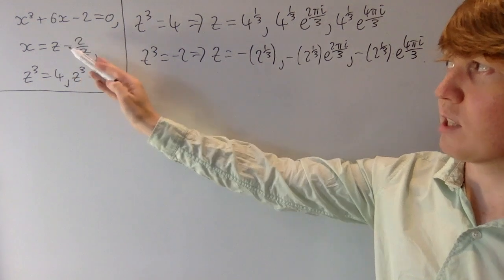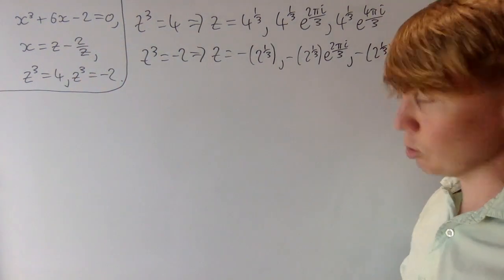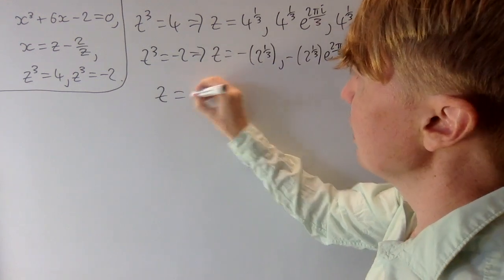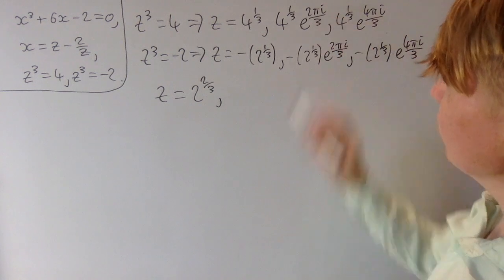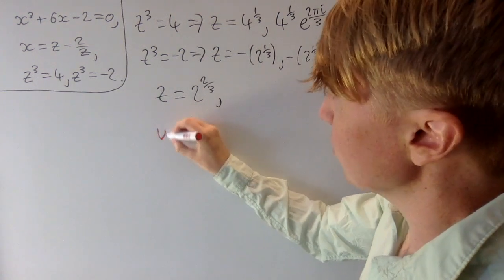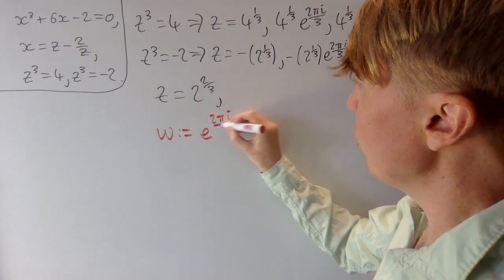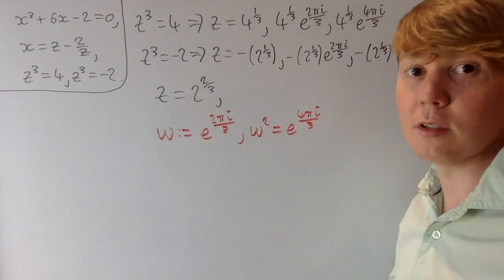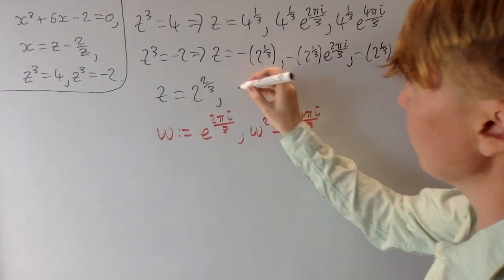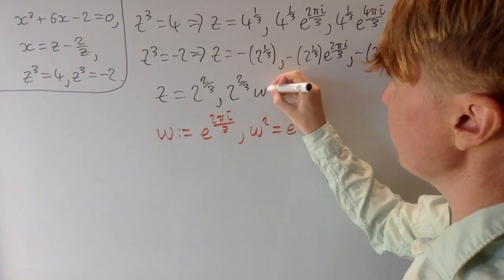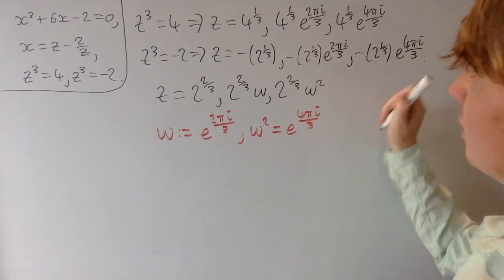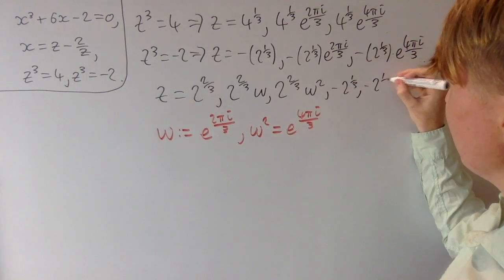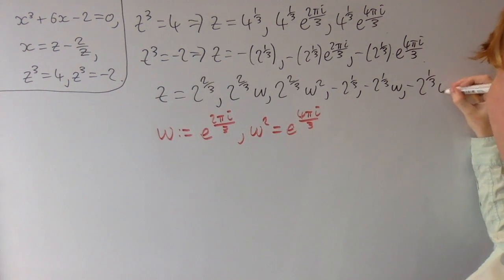We're about to substitute these z values into the expression z minus 2 over z. For convenience, we rewrite 4 as 2 squared, so 4 to the 1/3 becomes 2 to the 2/3. We introduce w equals e to the 2πi/3, so w squared equals e to the 4πi/3 and w cubed equals 1. This gives us all potential z solutions: 2 to the 2/3, 2 to the 2/3 times w, 2 to the 2/3 times w squared, minus 2 to the 1/3, minus 2 to the 1/3 times w, and minus 2 to the 1/3 times w squared.